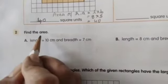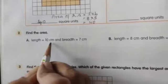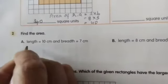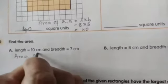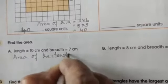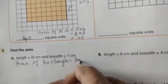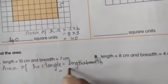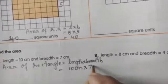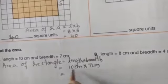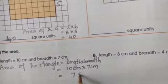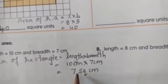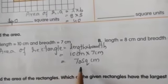Now second question, part A1: find the area. Length is equal to 10 cm and breadth is 7 cm. Always first write the formula children. Area of rectangle is equal to length into breadth. So length is 10 cm into breadth 7 cm — 10 sevens are 70 square cm. Area is measured in square cm.